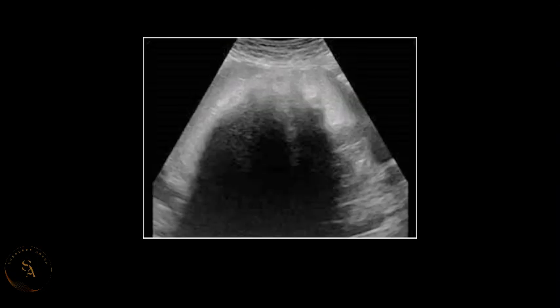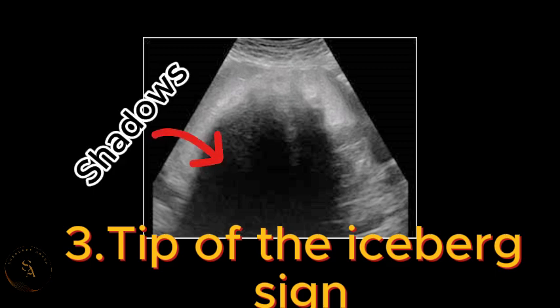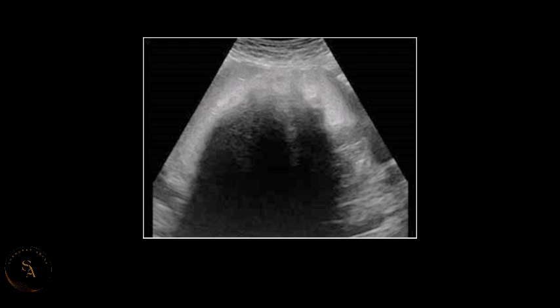The third sonographic feature is the tip of the iceberg sign. This presents as a hyperechoic mass with a strong posterior acoustic shadowing. The strong acoustic shadow results from the sonopaque nature of the contents of the mass, such as hair, which completely absorbs the ultrasound beam, leaving only the anterior part of the mass visible, appearing hyperechoic.